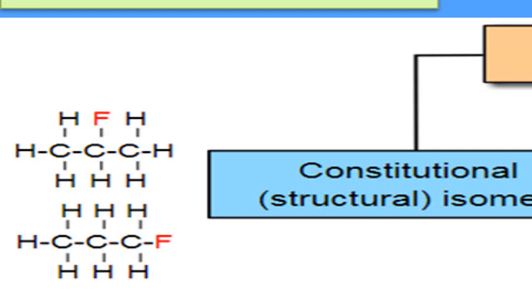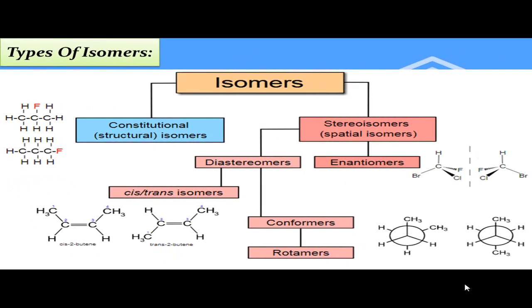اب ہم stereo isomers کو define کرتے ہیں جن کو spatial isomers بھی کہتے ہیں۔ ان میں ہم space میں atoms کی connectivity دیکھتے ہیں۔ Two molecules are described as stereo isomers if they are made of the same atoms, connected in the same sequence, but the atoms are positioned differently in space۔